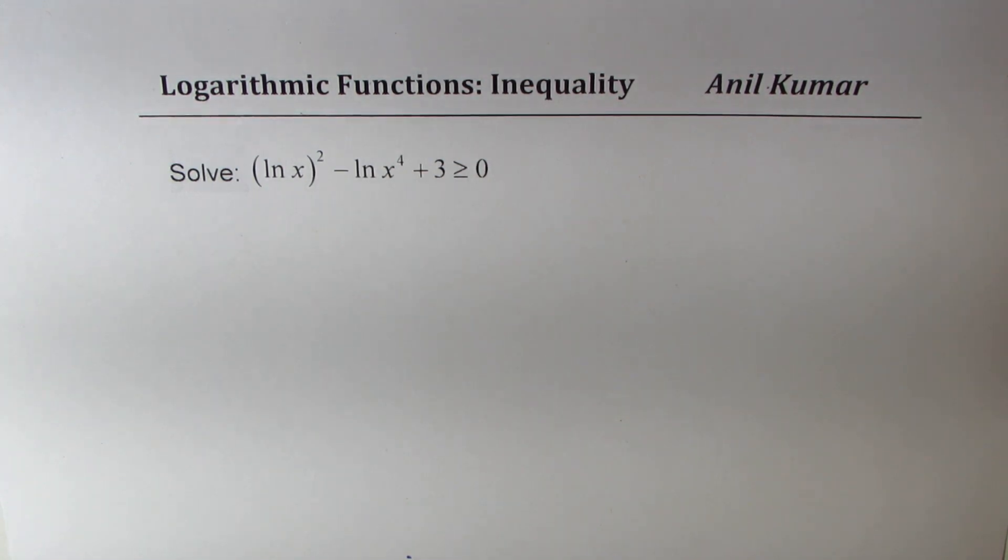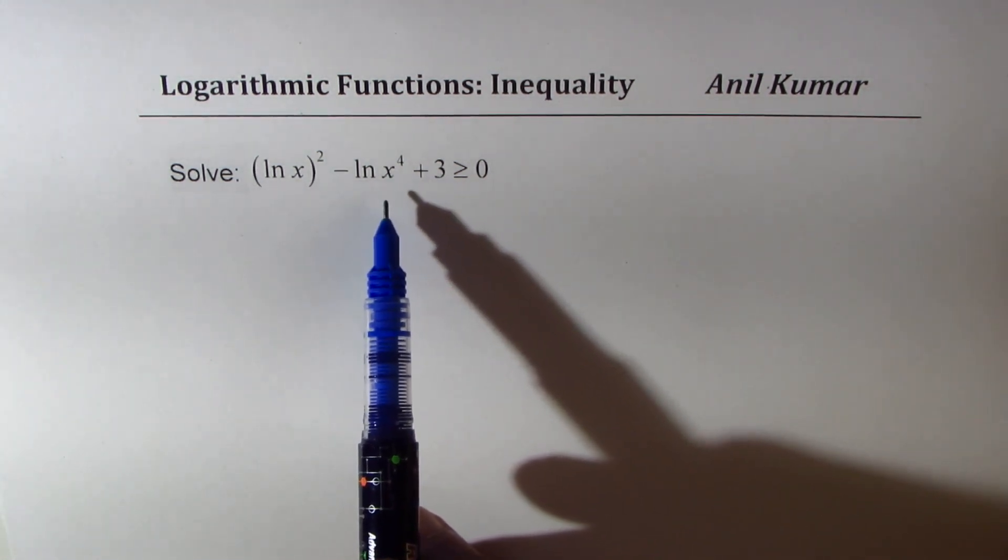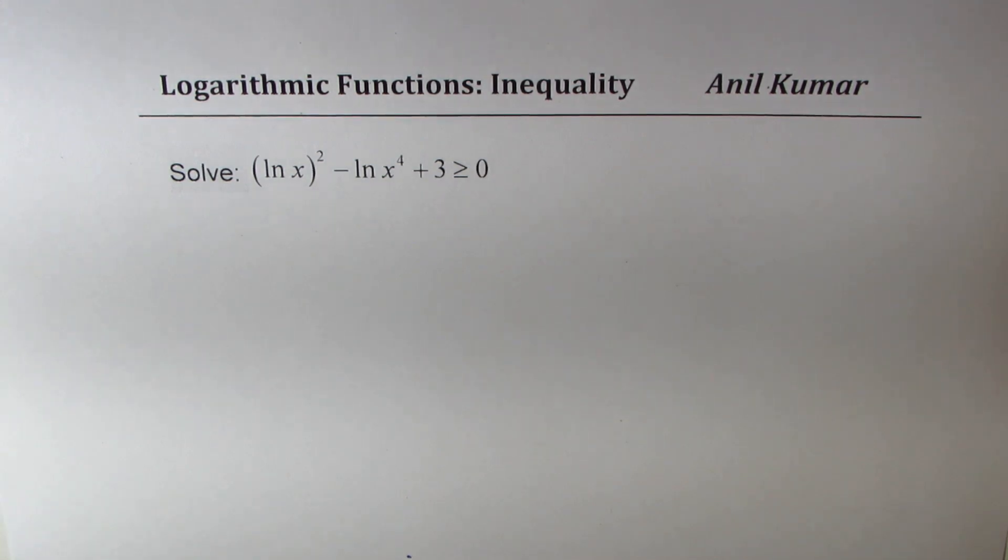We are looking into logarithmic functions inequality. We need to solve (ln x)² minus ln x to the power of 4 plus 3 greater than or equal to 0.